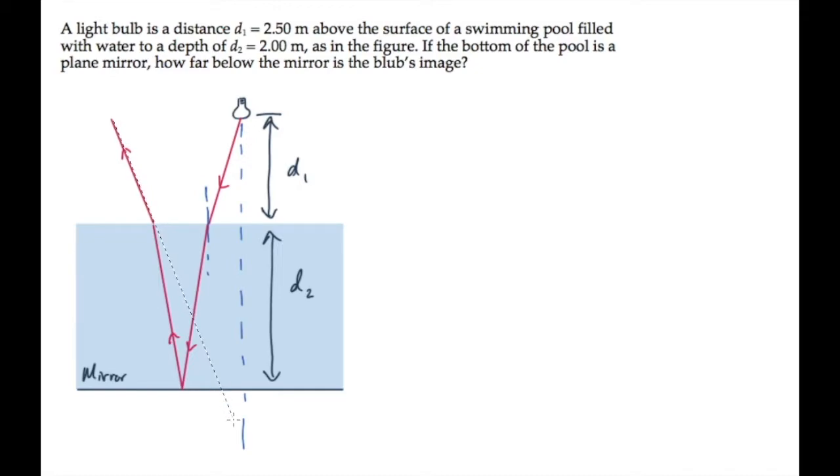If we now trace this ray backwards, as I'm showing in this orange line, it will intersect the vertical where the image forms.